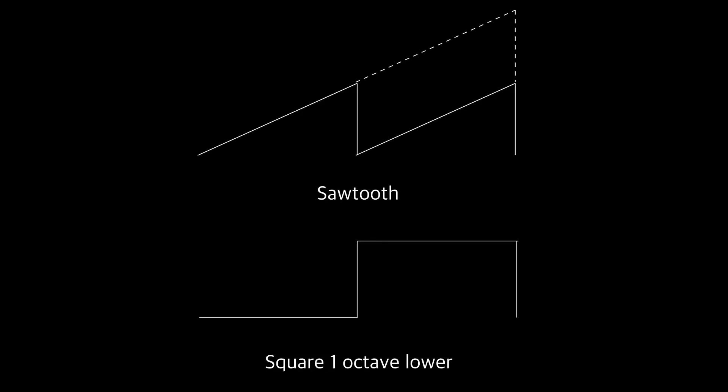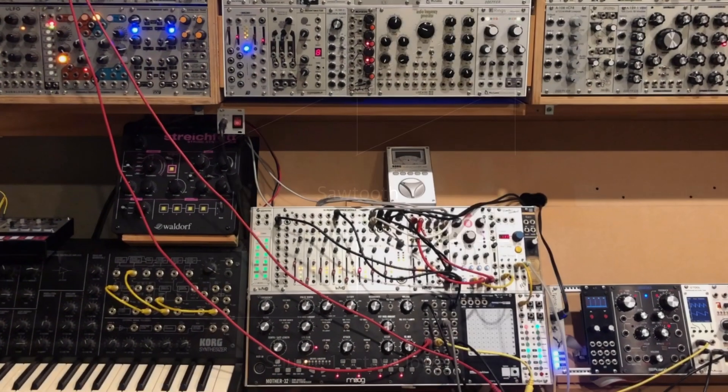I'm showing a ramp wave here, but if the voltage generated by your VCO or clock divider has a different polarity, you'll just need to invert one of the waves first. In this example I'll use a Mother-32, which is a very simple oscillator with just saw and pulse waves.